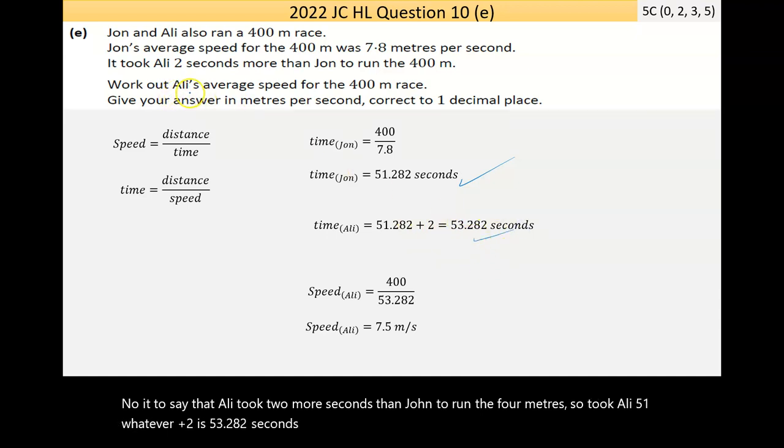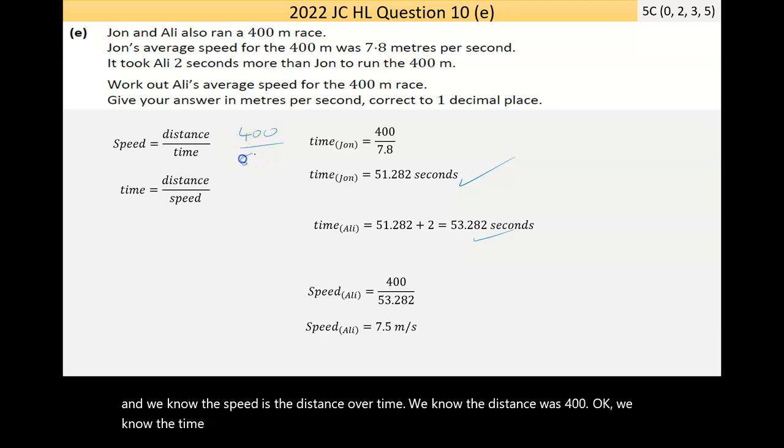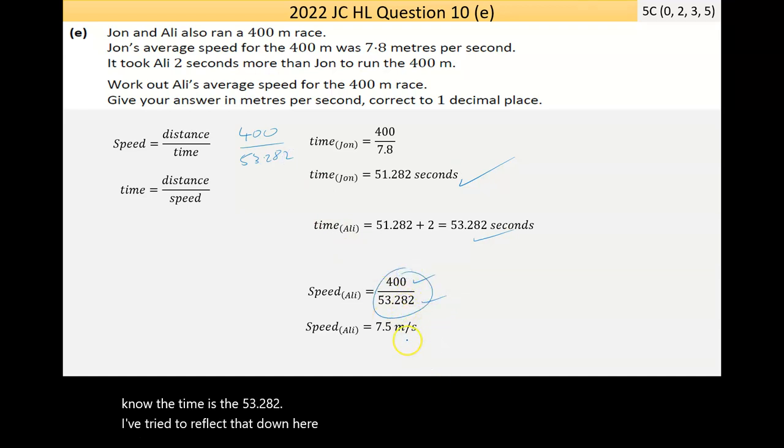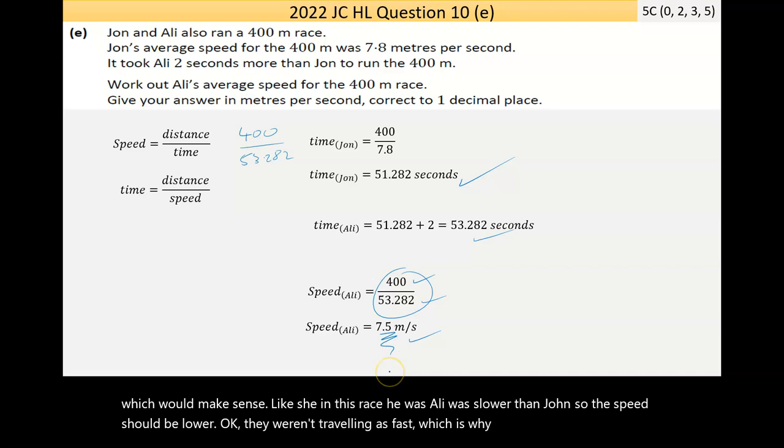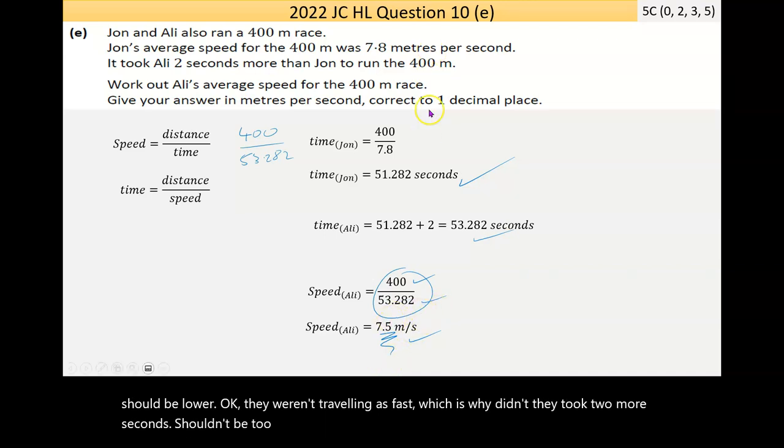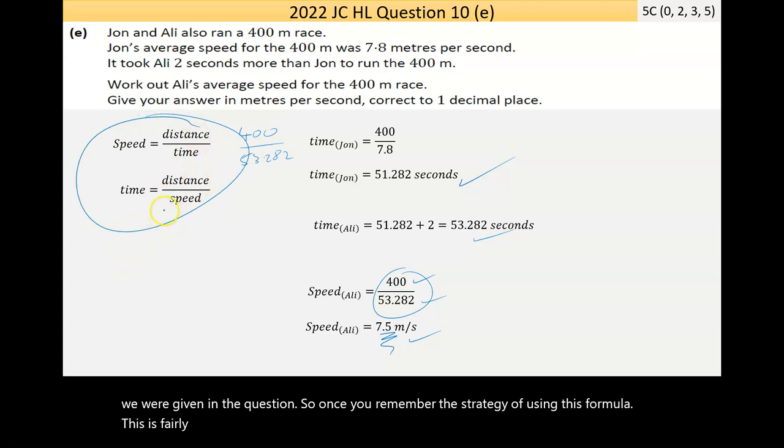Now the question is ultimately asking us for the speed of Ali. And we know the speed is equal to the distance over time. We know the distance was 400. We know the time is 53.282. I've tried to reflect that down here. Put that through the calculator. I got 7.5 meters per second, which should make sense. In this race, Ali was slower than John. So the speed should be lower. They weren't traveling as fast, which is why it took two more seconds. It shouldn't be too much different. And 7.5 isn't all that much different than 7.8, which we were given in the question.